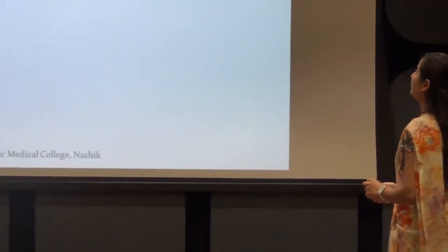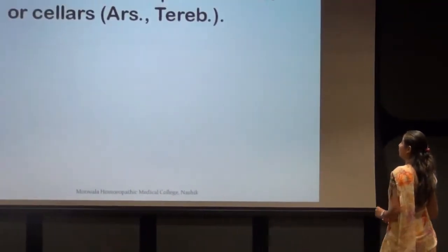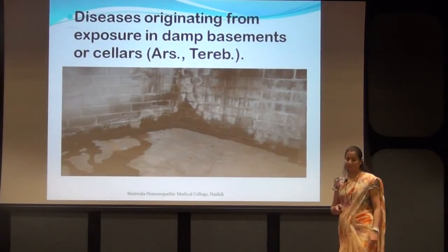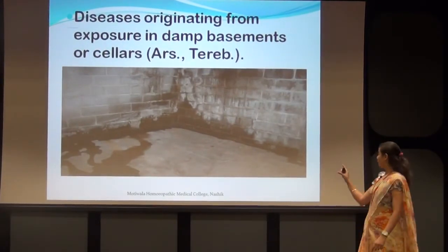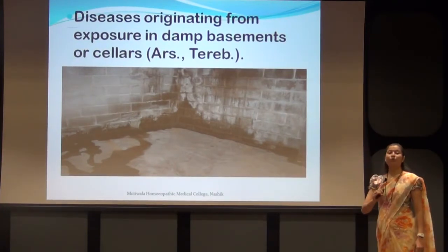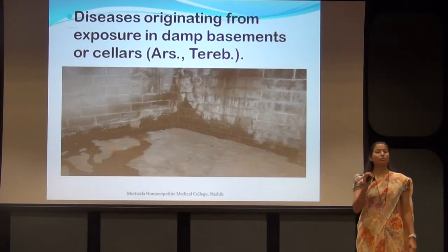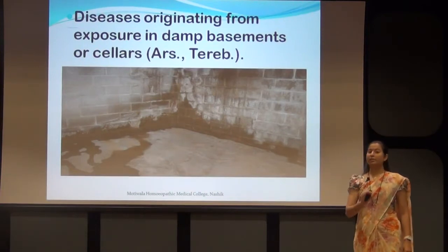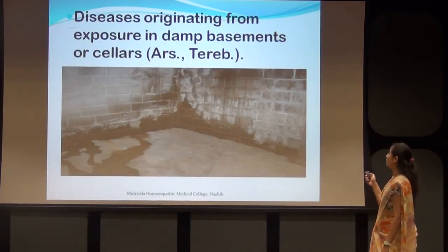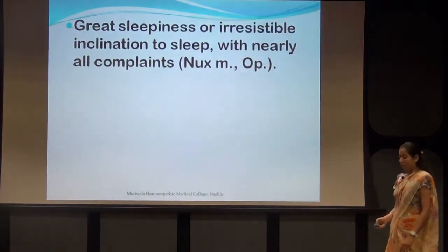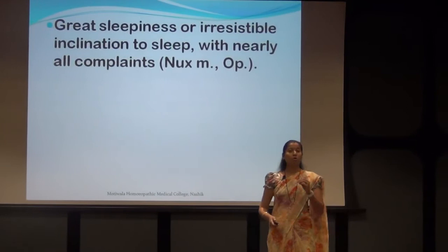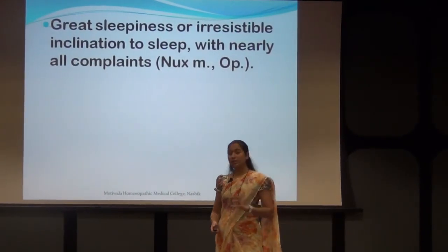Diseases originate from exposure in damp basements and cigars. Other remedies are Arsenic and Terebinthina. The dampness of the room is really going to affect the hydrogenoid-constitution patient, and that's why there is catarrhal inflammation. The elements from damp basement and cigar are key causative factors.